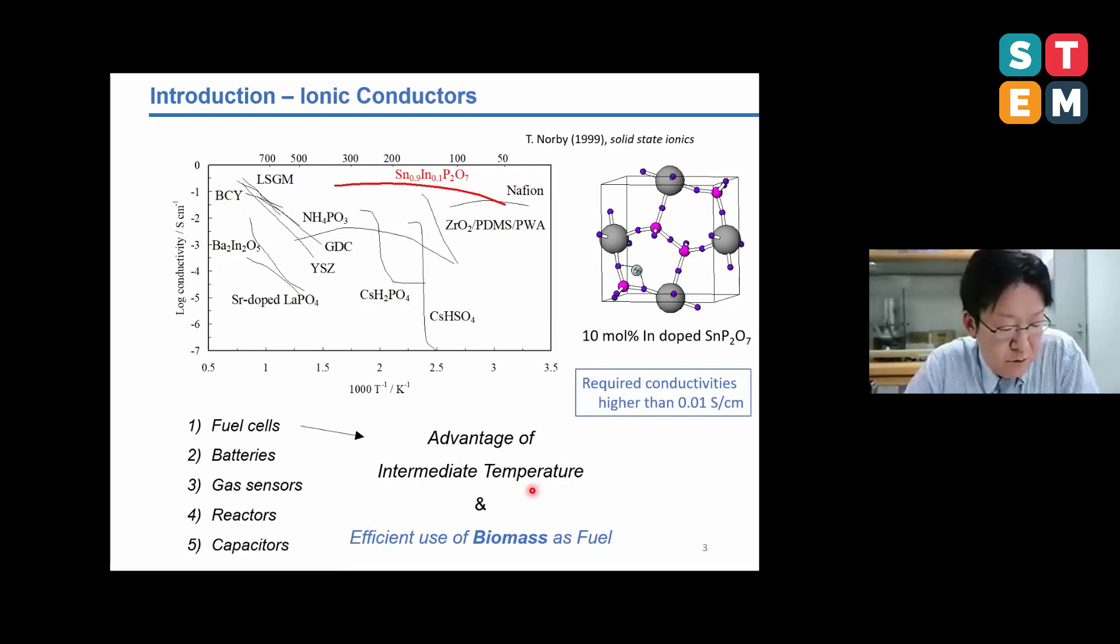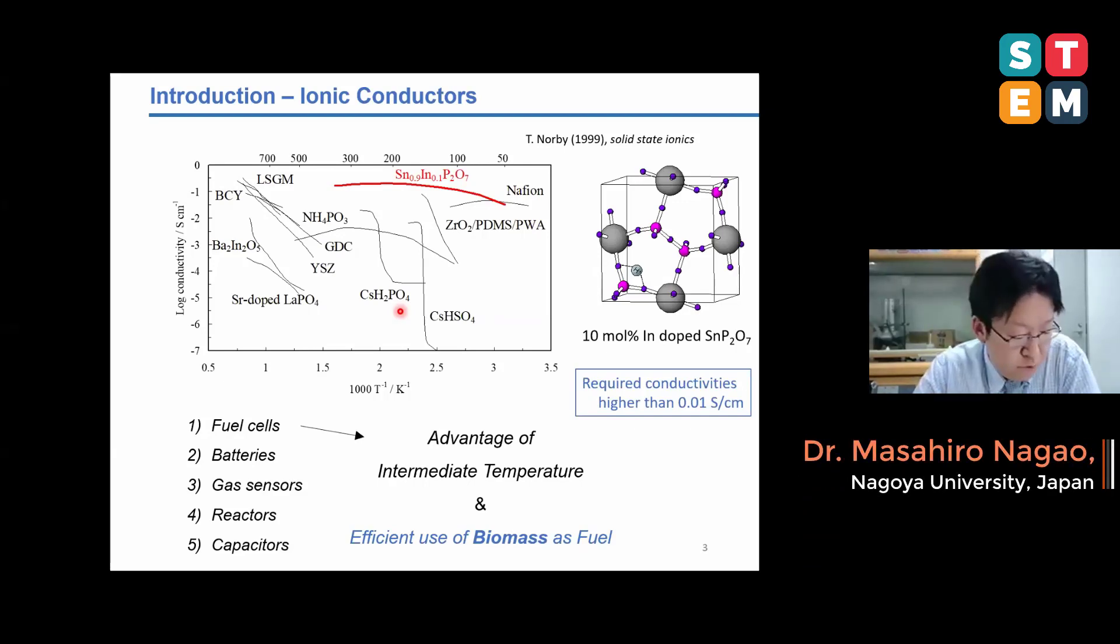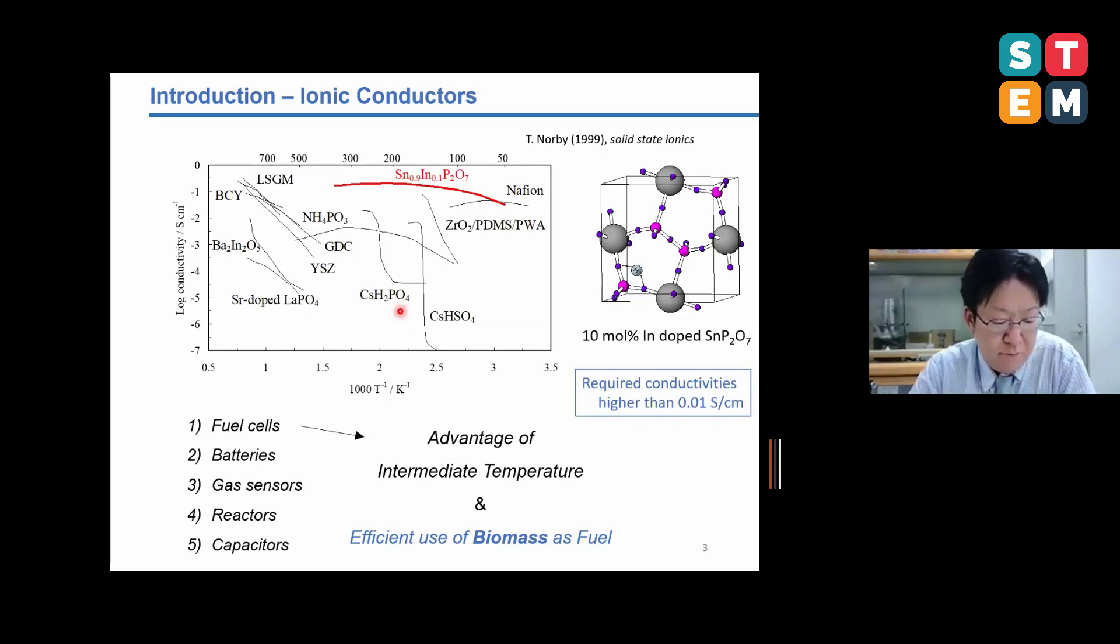This results from the lack of ionic conductors at this temperature range. In these figures, various ionic conductors, especially with respect to fuel cell electrolytes, are summarized with respect to Professor Norby's work. In previous studies, caesium hydrogen sulfate and caesium dihydrogen phosphate were reported as proton conducting materials in this temperature range. When we try to use these ionic conductors as fuel cell electrolytes, the required conductivities are higher than 0.01 Siemens per cm. However, the conductivities of these materials are almost at the limit.